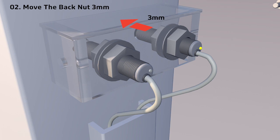First, loosen the back nut three millimeters to allow for space to extend the light indicator head three millimeters out.